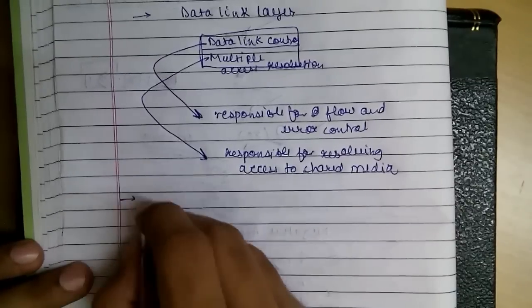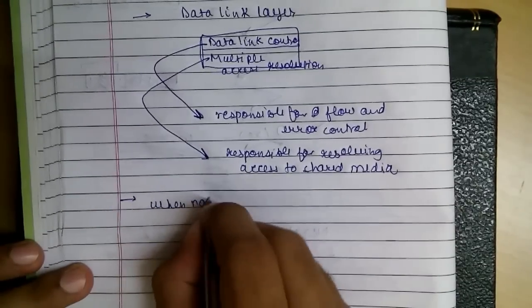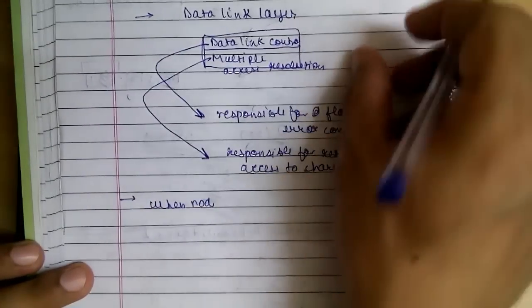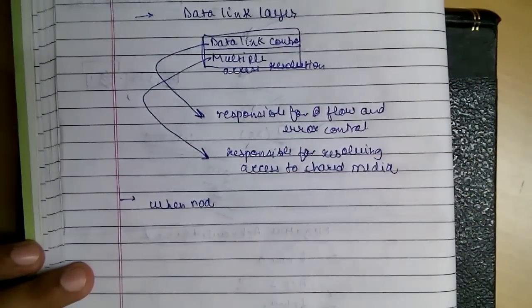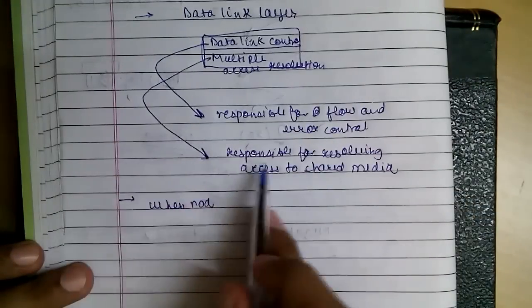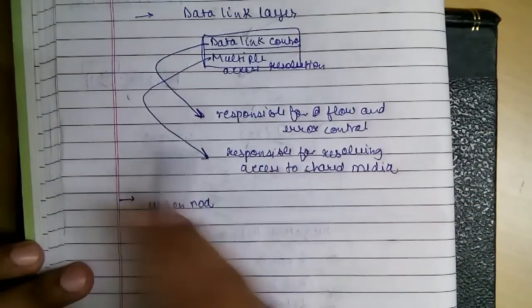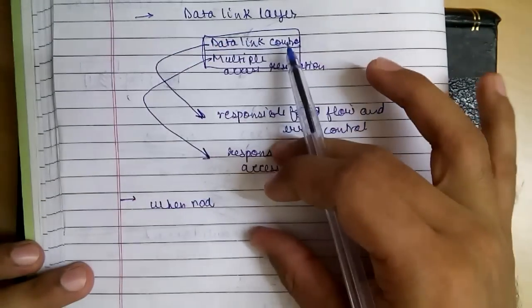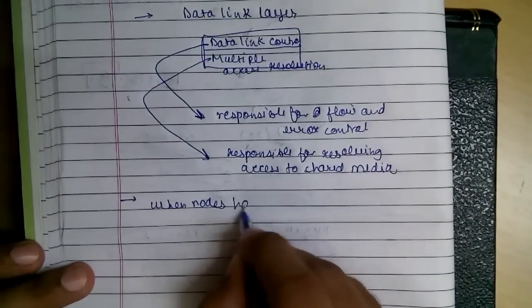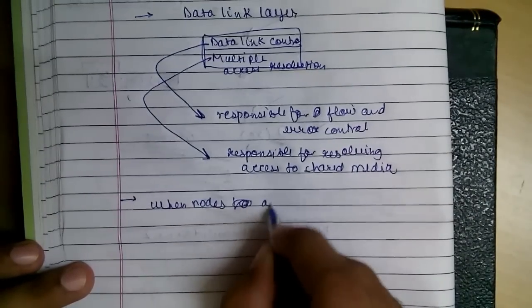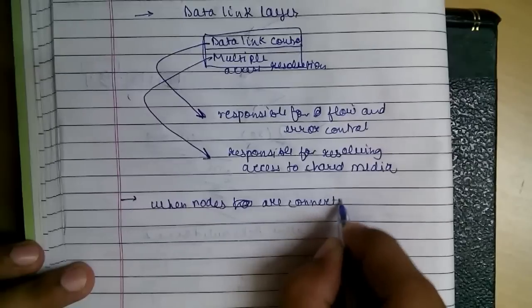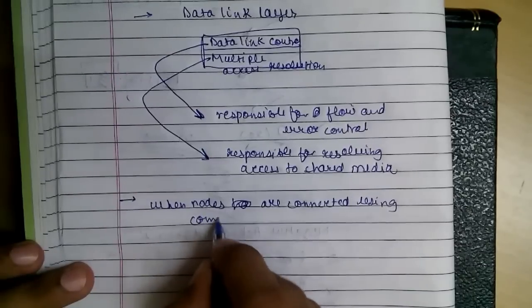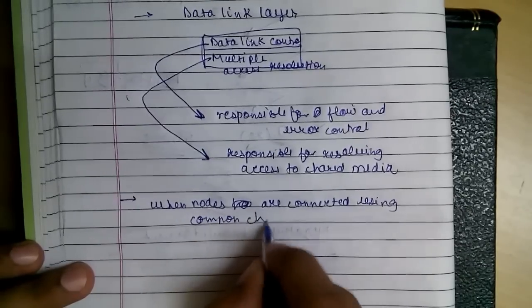When nodes are connected, like there are various stations and there is a single path to the receiver, there is no one-to-one mapping. When nodes are connected using a common channel...